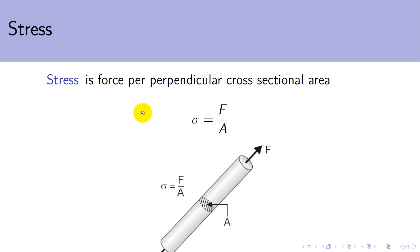When we combine stress and strain, we're able to work out a Young's Modulus. Stress in a material is a force per perpendicular cross-sectional area. If we've got a sample of a material and we apply a force, this material has a cross-sectional area, and to work out the stress that this material experiences, we do force divided by that area.